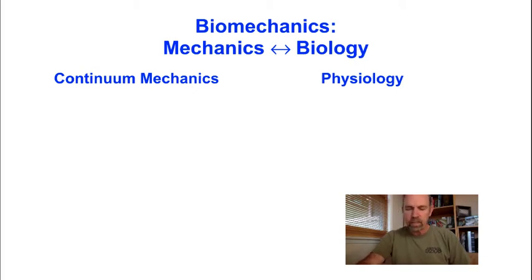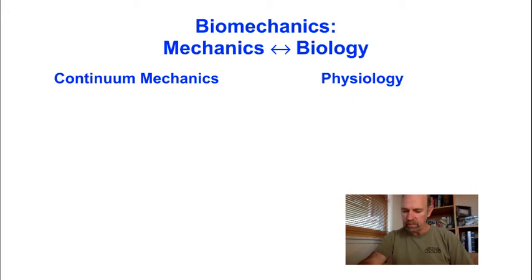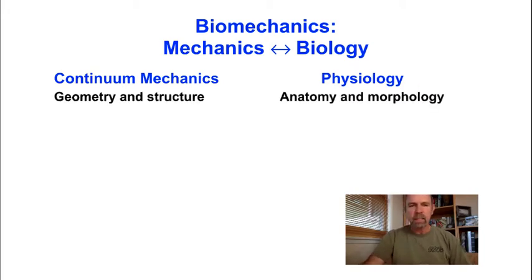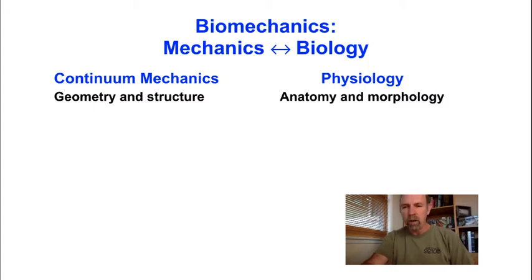Let's consider on the left side the elements of every boundary value problem in continuum mechanics. There are key parallels to the major topics of study in physiology. The first thing we need in continuum mechanics is the geometry and structure of the body of interest, and the first thing we do in physiology is explore the functional anatomy and morphology of the tissue and organ of interest.